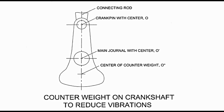The counterweight has a certain shape. The distance between its center of gravity and the center of the main journal is taken into account. You may notice that the distance between the center of counterweight O double dash and the center of main journal O dash is small as compared to the distance between the center of main journal O dash and the center of crank pin O. This is because the counterweight is heavy as compared to the crank pin big-end assembly.